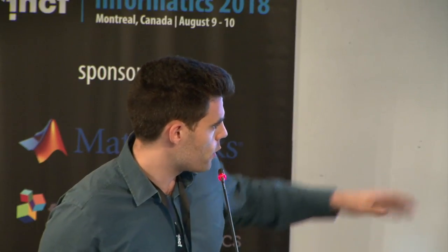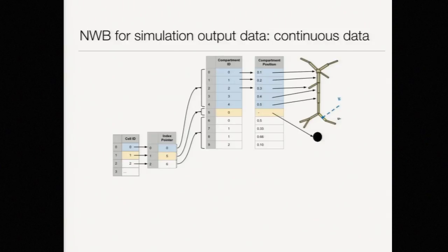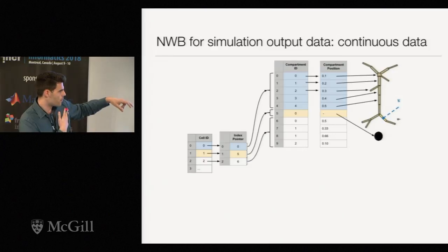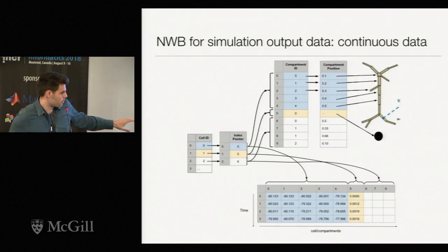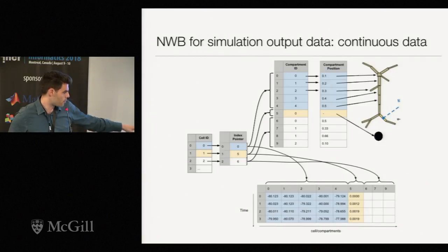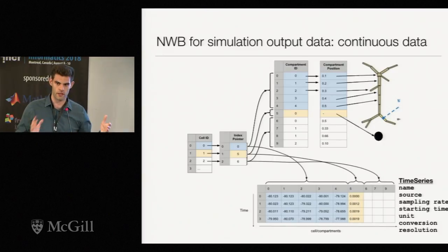The other thing we need to do is store continuous data. Here we use a similar strategy: a cell ID and an index pointer. This index pointer maps to compartment IDs, which are physical locations of cells. Similar to spike times, you want the ability to mark a different number of physical locations per cell — the same lookup strategy where the index pointer maps to compartment IDs, giving you the physical locations within compartments.